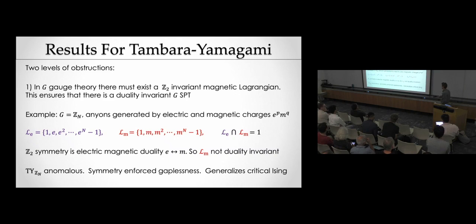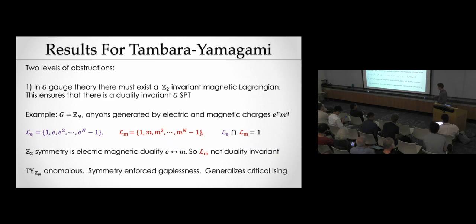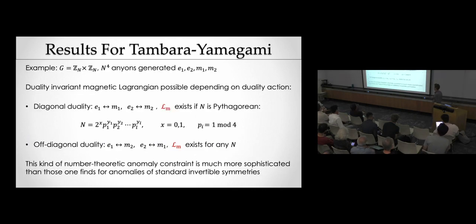This generalizes a familiar fact about the critical Ising model: if you want to preserve the Kramers-Wannier duality as a symmetry of the vacuum, you have to be at the gapless point at the critical temperature. For Z2, we can move away from the critical temperature at the expense of spontaneously breaking that symmetry — and that's true for the ZN analog as well. For ZN × ZN, the story is richer: you get N^4 anyons, two species of electric charges, two of magnetic charges, and depending on which duality you study, you may or may not find a duality-invariant Lagrangian.